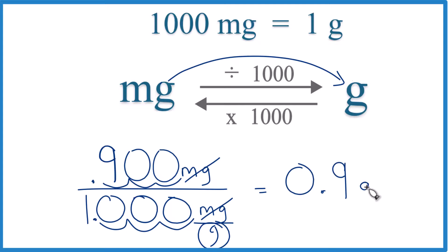we get 0.9 grams. That's it. This is Dr. B converting 900 milligrams to grams. The answer, 0.9 grams. Thanks for watching.